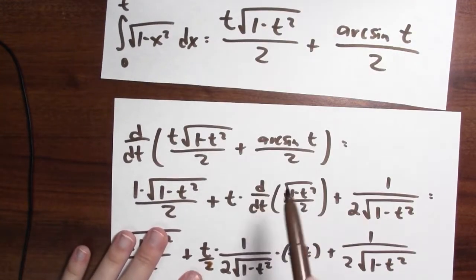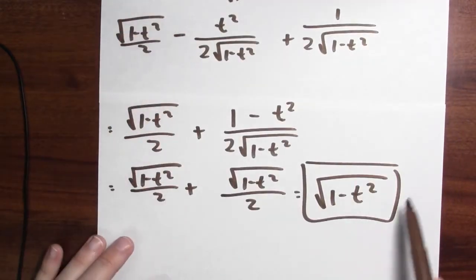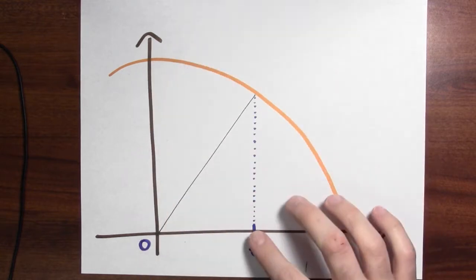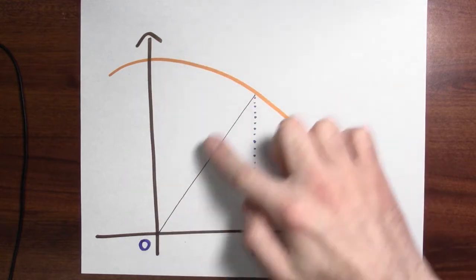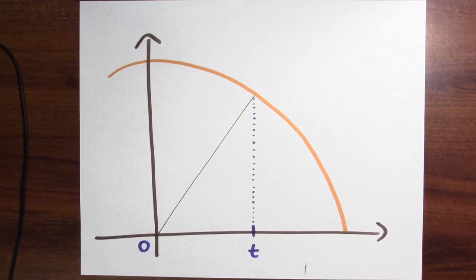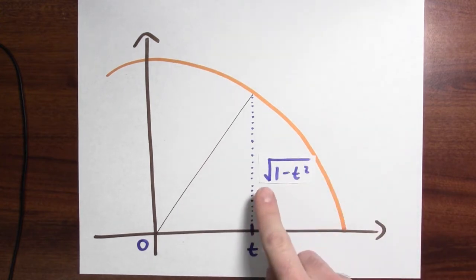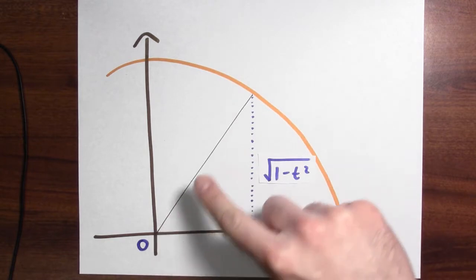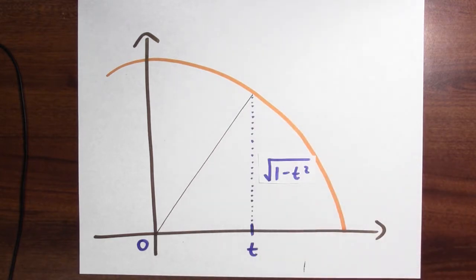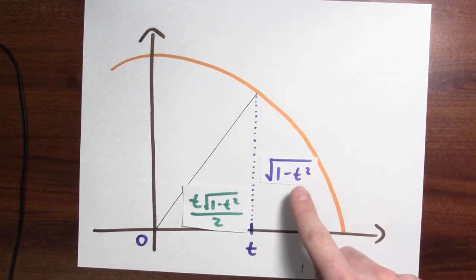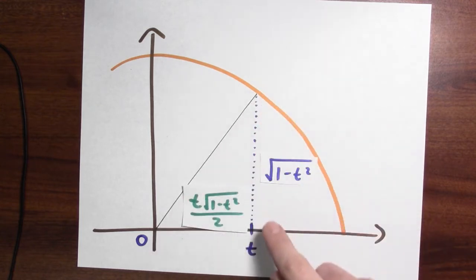I started by wanting to differentiate this expression and ended up with the square root of 1 minus t squared. The second method is a bit more geometric. I want to find geometrically the area in here, and I can break that region up by drawing a line to get a circular sector and a triangle. The height of that triangle is the square root of 1 minus t squared — the base is length t and the hypotenuse is length 1, so by the Pythagorean theorem the height is the square root of 1 minus t squared. The area of the triangle is base t times height, the square root of 1 minus t squared, divided by 2.